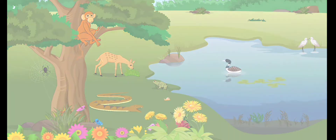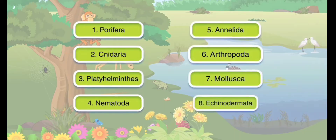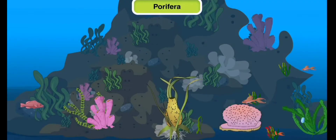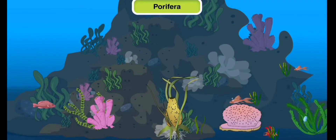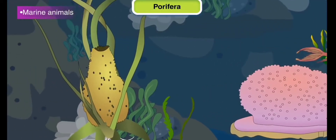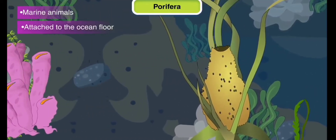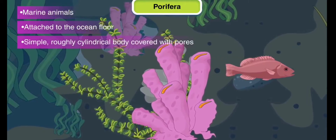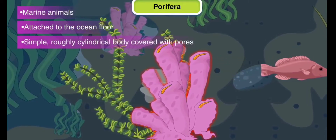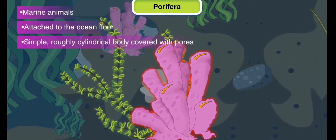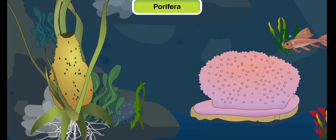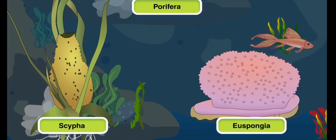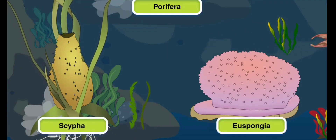Invertebrates are further divided into eight major phyla. Phylum Porifera: Porifera are marine animals that are found attached to the ocean floor. They have a simple, roughly cylindrical body which is covered with pores. Sponges such as Sypha and Euspongia are examples of poriferans.